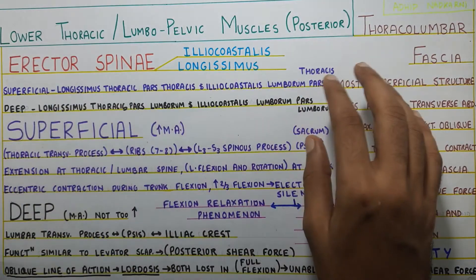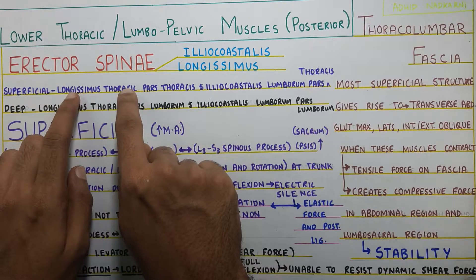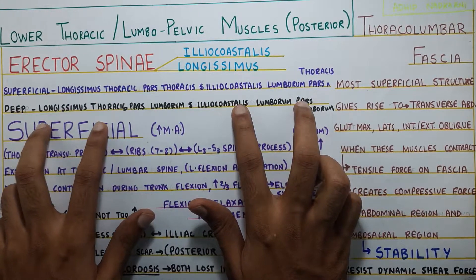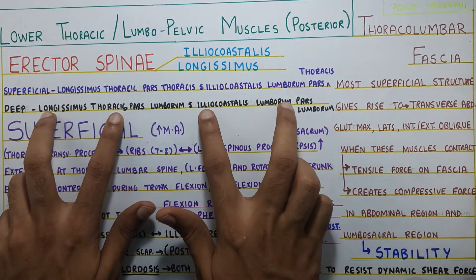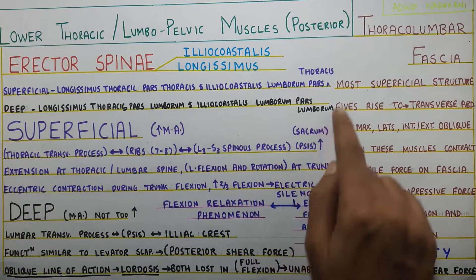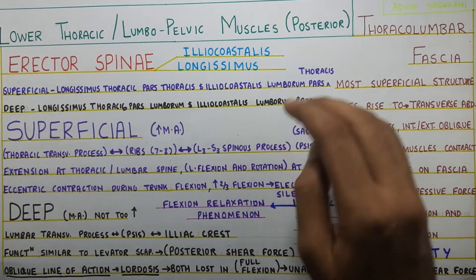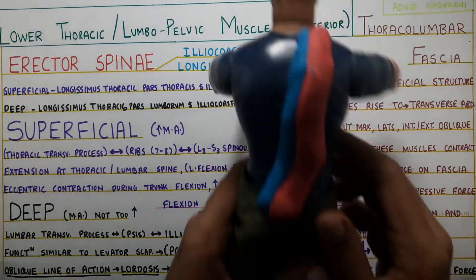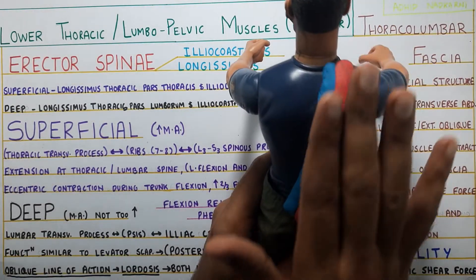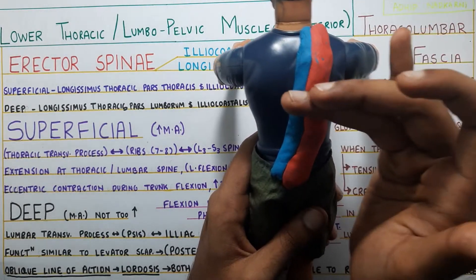I know you got confused with all these terms, but if you see, there is a pattern: longissimus thoracis and iliocostalis lumborum. The only part that differs is pars thoracis versus pars lumborum. So basically the superficial layer is more in the thoracic region, whereas the deep layer is more in the lumbar region. If you look at the iliocostalis and longissimus muscles, longissimus is here and iliocostalis is here — they have an oblique orientation that you need to keep in mind, and some parts are in the deep region while others are superficial.